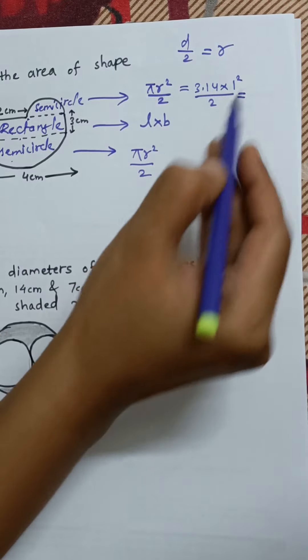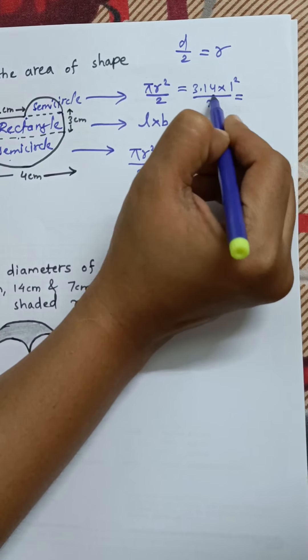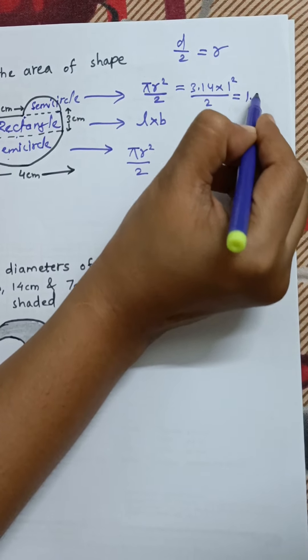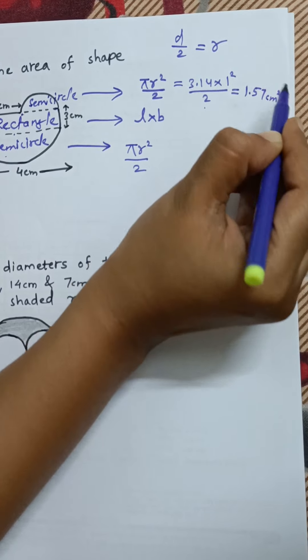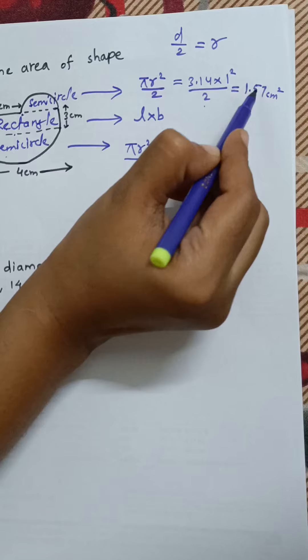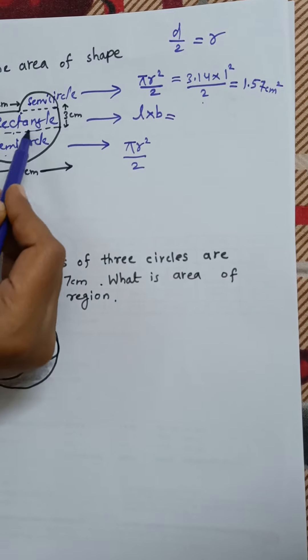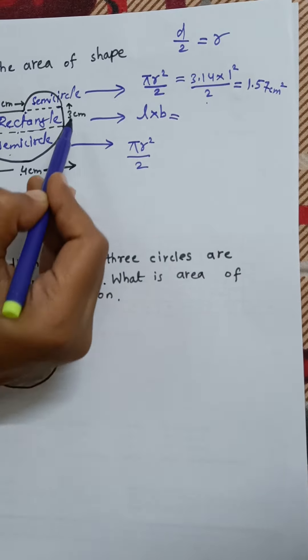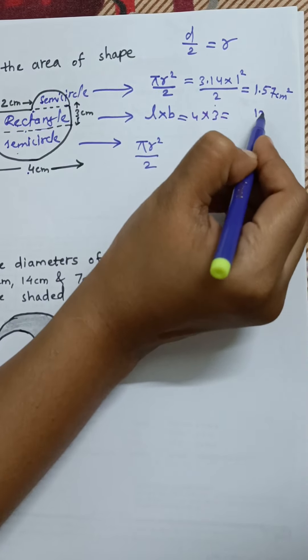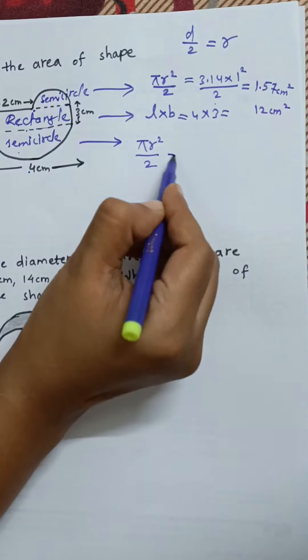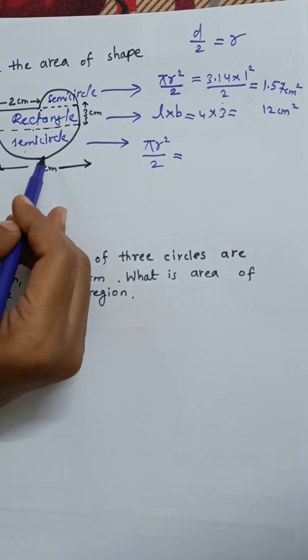In this case, one square is one and 3.14 divided by 2 is nothing but 1.57 centimeter square. Area is always in square units. Next you see the rectangle's length is 4 centimeter, width is 3 centimeter, so we'll just take it 12 centimeter square.